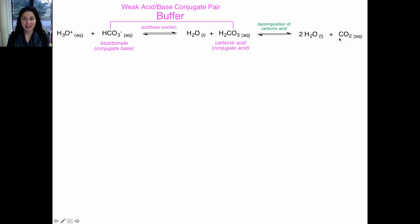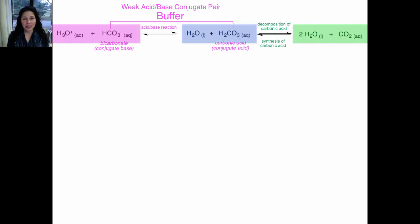So breathing — exhaling carbon dioxide — can affect the pH of your blood. The reaction in the opposite direction is called synthesis because we're taking carbon dioxide and water and creating carbonic acid. These two equilibria are linked, and I'm going to write an abbreviated version of this link between the acid in your blood and carbon dioxide. The change in carbon dioxide concentration in your blood can dramatically affect the pH.